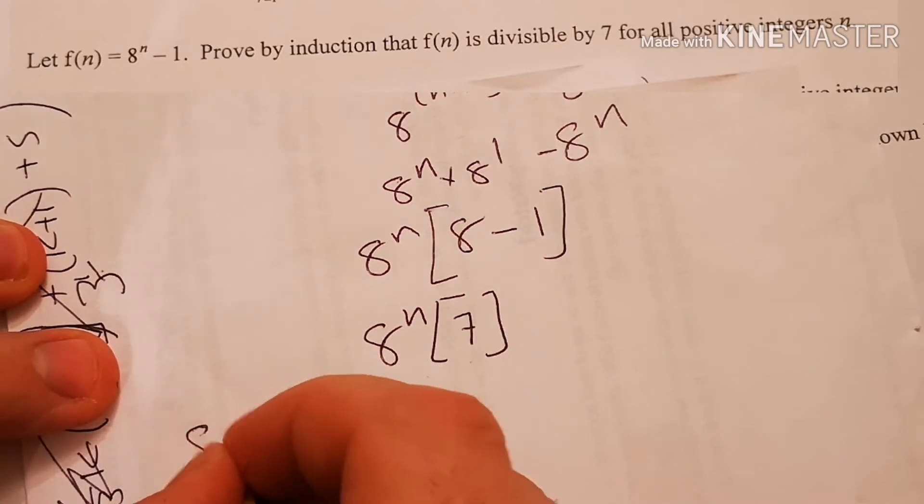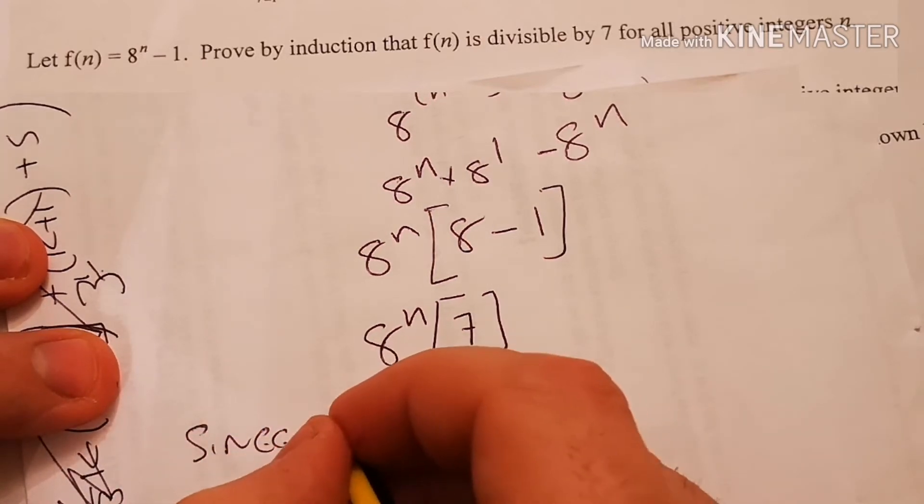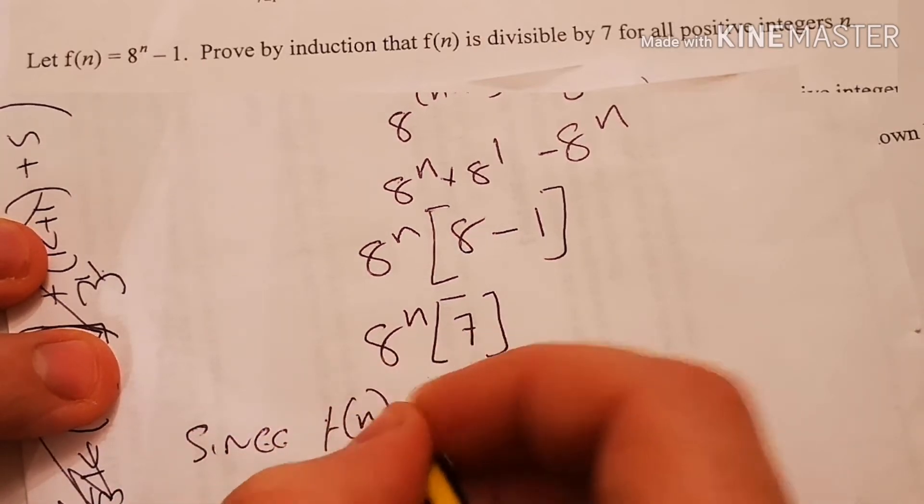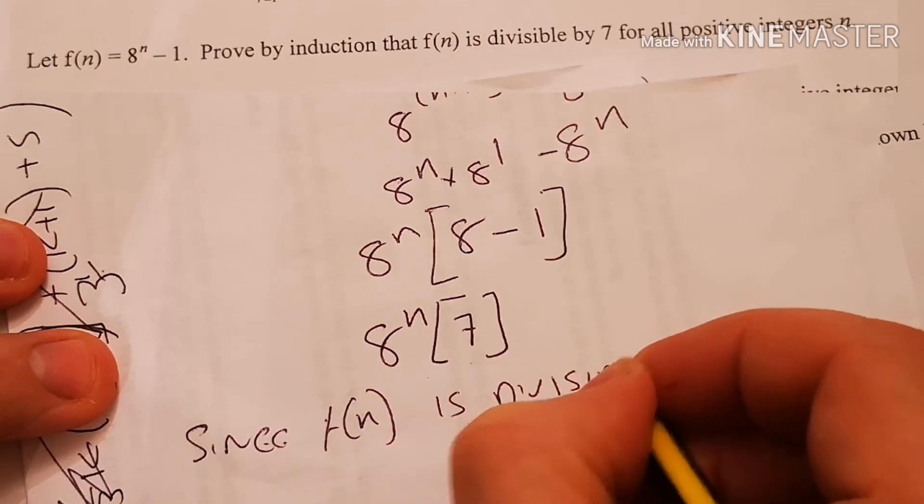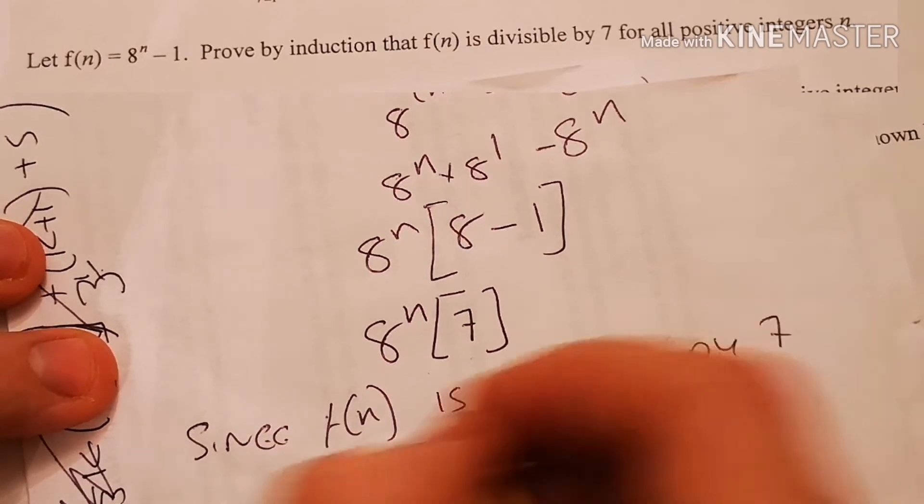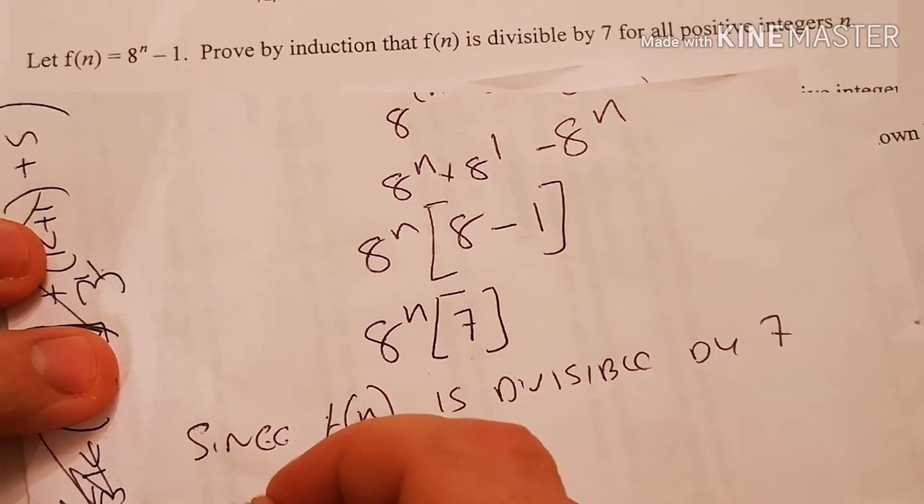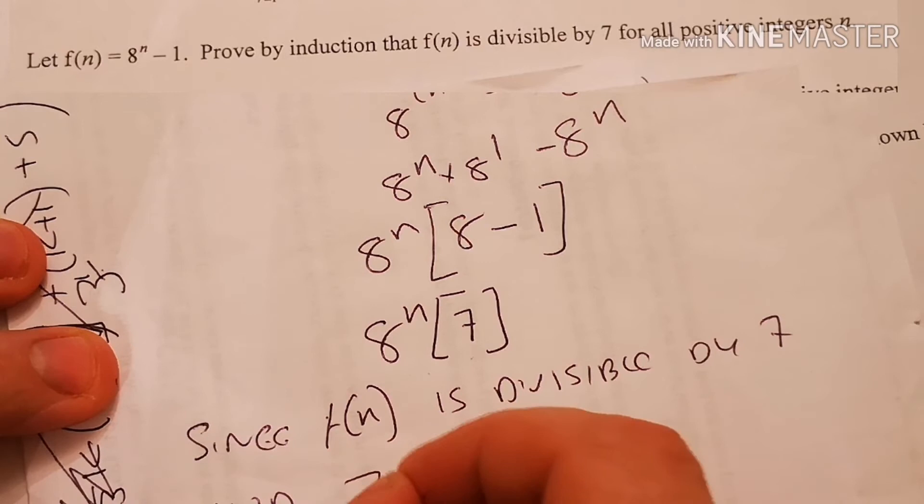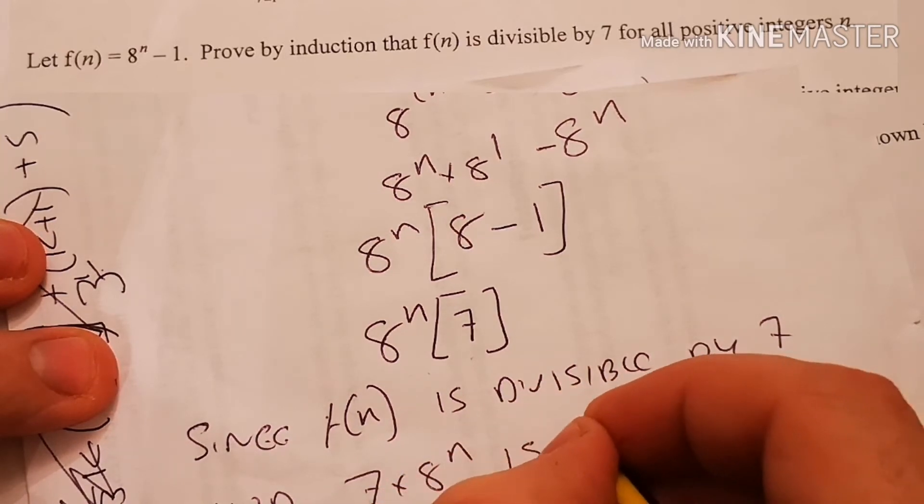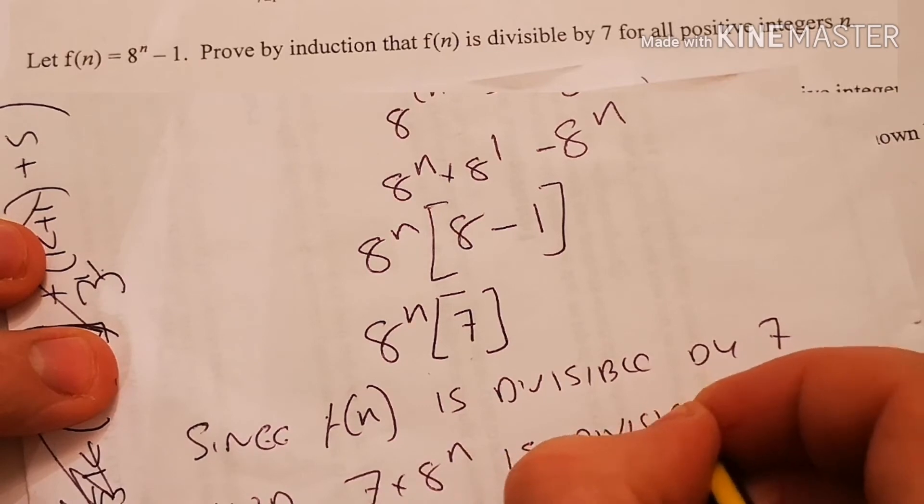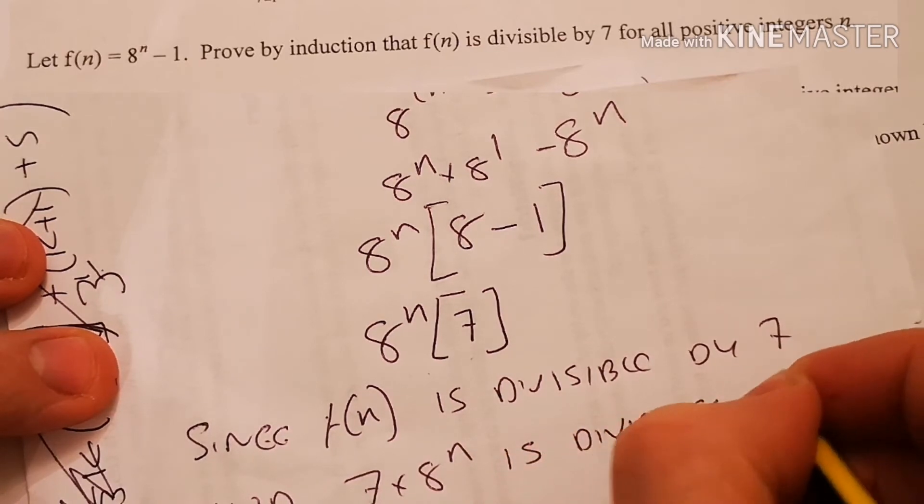So I don't have to write this since f(n) is divisible by 7, and 7 times 8^n is divisible by 7.